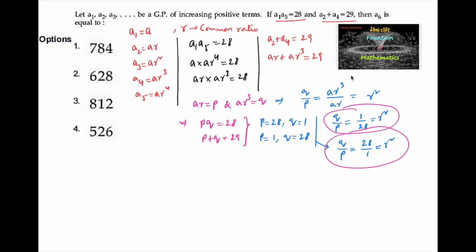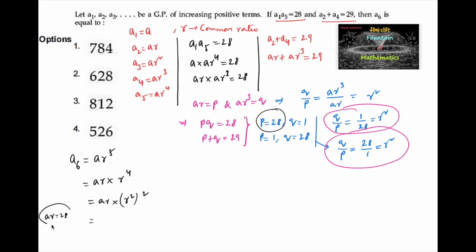Now let us consider a6, which is equal to ar⁵, that is ar·r⁴, that is ar·(r²)². When p is equal to ar is equal to 28, we can write a6 equals 28·(1/28)², which gives 28·(1/28) = 1/28.